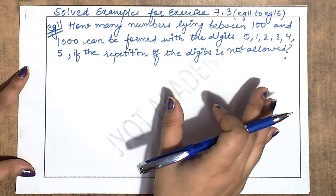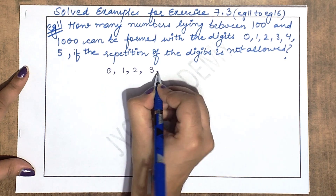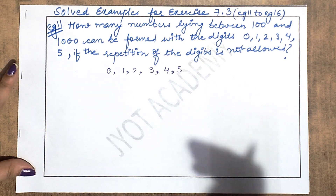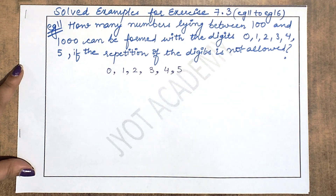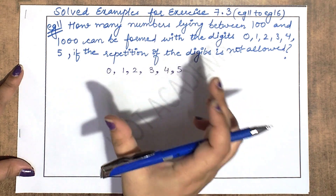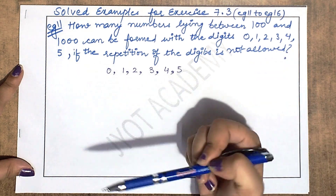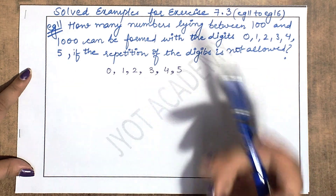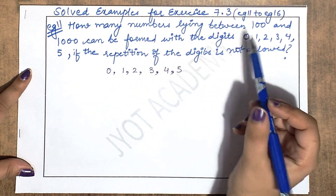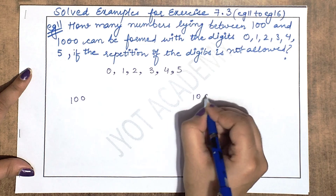Sabse pehli baat, repetition is not allowed. Doosri baat, aapko in hi given digits ke saath number create karna hai. Is question mein specifically aapko nahi given hai ki aapko kitne digit ka number create karna hai. Bas ek statement di hai ki aapke numbers 100 aur 1000 ke beech mein hone chahiye.